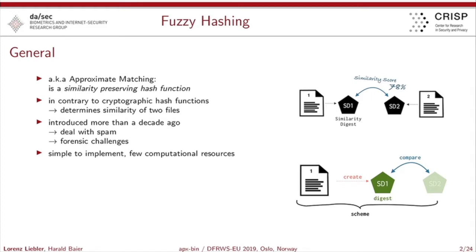Fuzzy hashing was introduced more than a decade ago. Perhaps some of you are familiar with the algorithm SpamSum. Afterwards, it was constantly extended and redeveloped for different forensic challenges. It's most often simple to implement and only needs few computational resources, so it's best used for bulk data if you need to filtrate specific datasets.